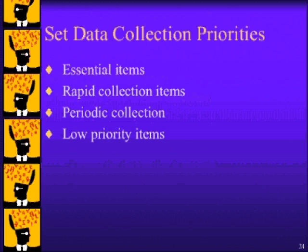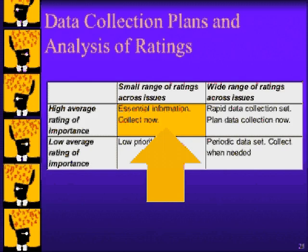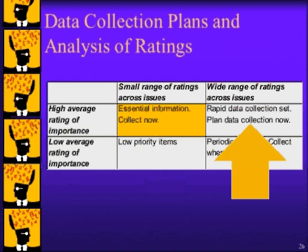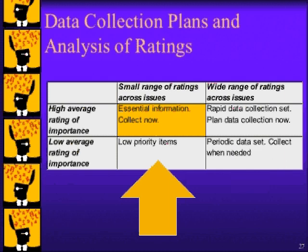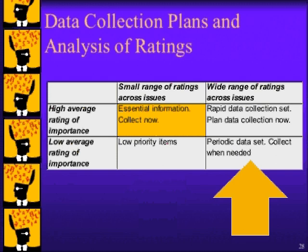The classification of information ratings into various categories of data collection is done based on the range and the average of the ratings. If an information item has a high average rating and a small range, it means that it has been judged to be important on nearly all upcoming decisions and therefore belongs to the essential data collection category. A high average and wide range puts the information item into rapid data collection — items in this category are not routinely collected; instead, one plans to collect these items when a need for information becomes more clear. A low average and low range puts the information item into the low priority category, which is usually ignored as the information is not important in most upcoming decisions. Items in the periodic category have a wide range but a low average — these items are important in some, but not many, decisions and are collected when they are needed.